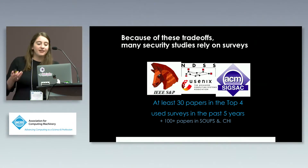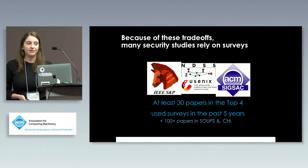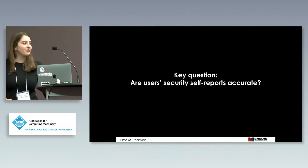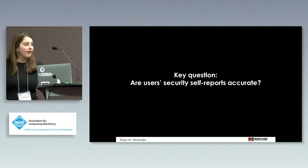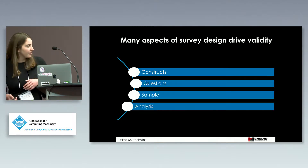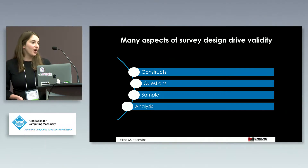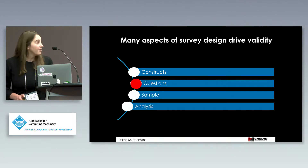From a cursory look, there have been at least 30 papers in the top four venues in the past five years using surveys, in addition to more than a hundred papers in SOUPS and CHI. The key question is whether people's self-reports in answer to these surveys are actually accurate of their real-world behavior. The validity of surveys depends not only on the kinds of constructs and questions we're asking, but also on who we're asking and how well they represent the broader population, and on our statistical analysis methods.